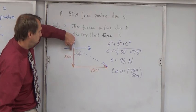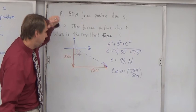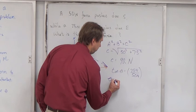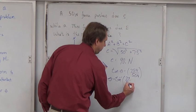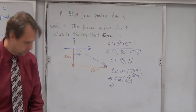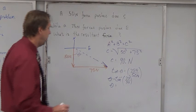So to get my theta, I can do the tangent to the minus one of 75 over 50. Again, the units cancel out. So let's see what theta equals. And that is 56 degrees.